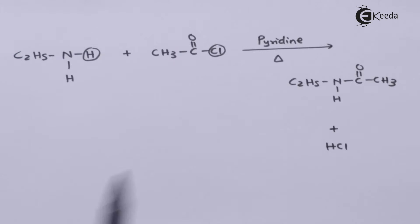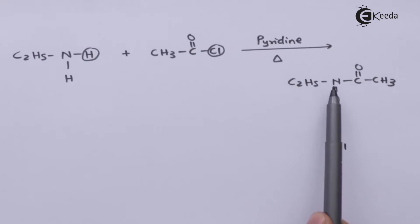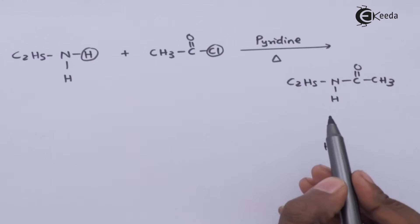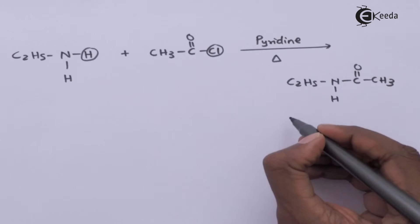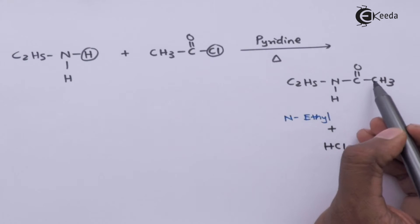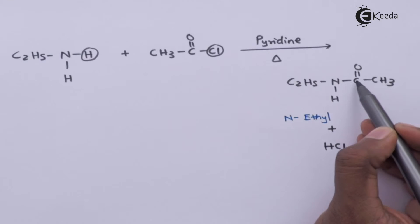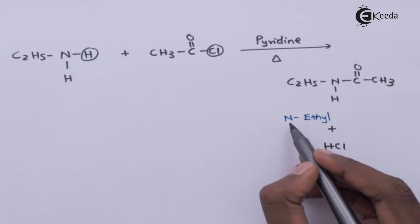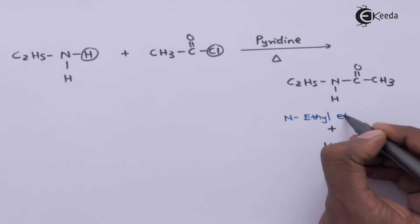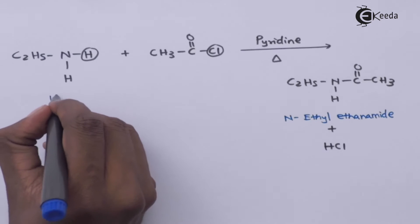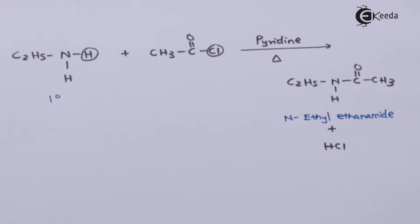The ethyl group (C2H5) is attached to the nitrogen atom, and the C=O–CH3 part forms the amide. The product obtained is an amide, and its name is N-ethyl acetamide. This was the reaction of a primary amine with acid chloride.